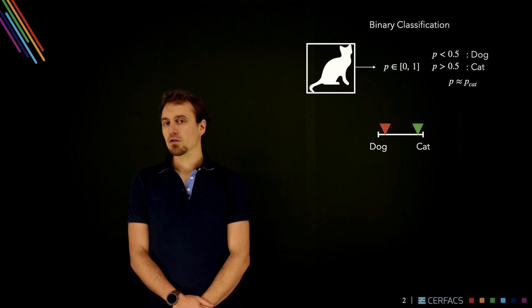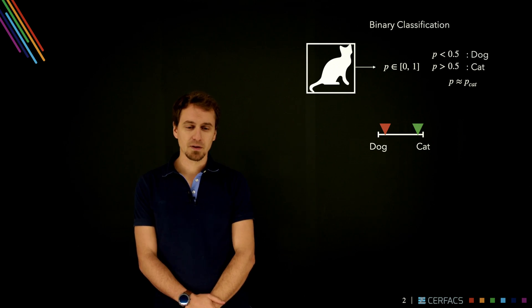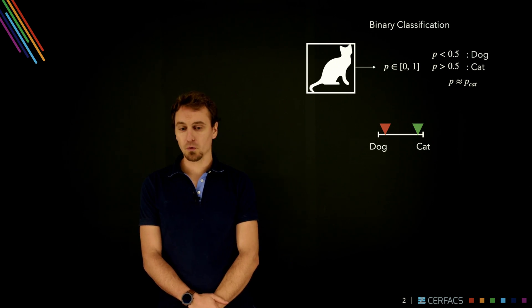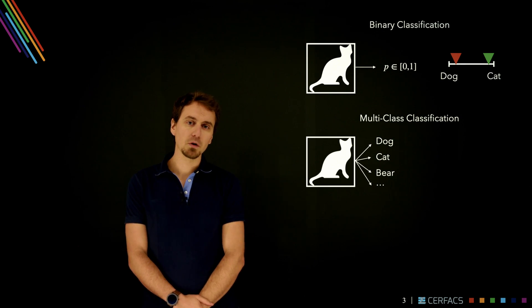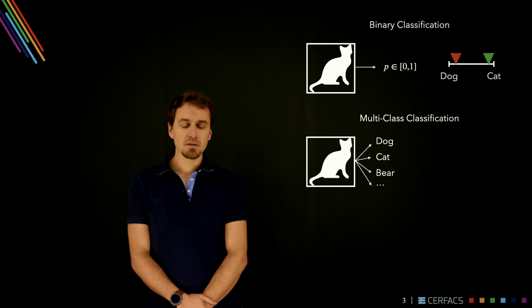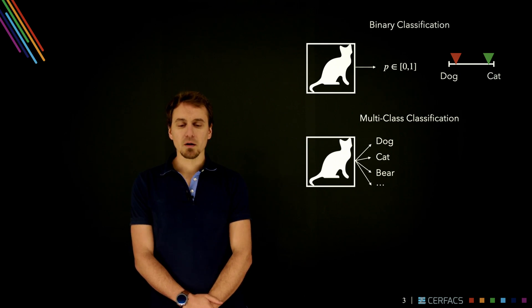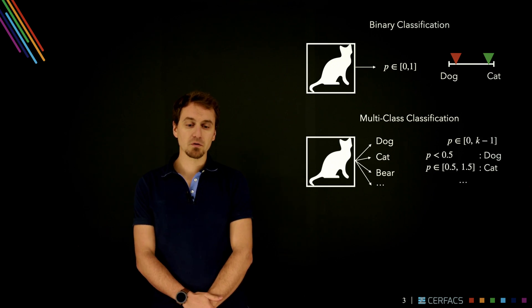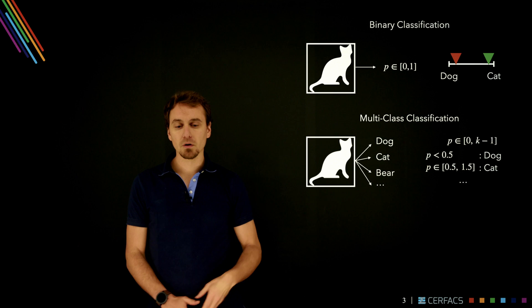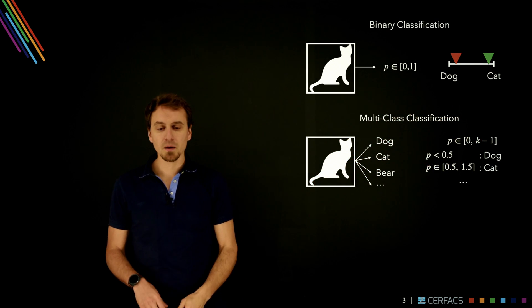Now binary classification is useful, but it's limited to two classes as its name indicates, and there are many cases where you need more than that. If you have more than two classes we call this multi-class classification. We can introduce one value p that is between 0 and k-1, k being the number of possible classes.